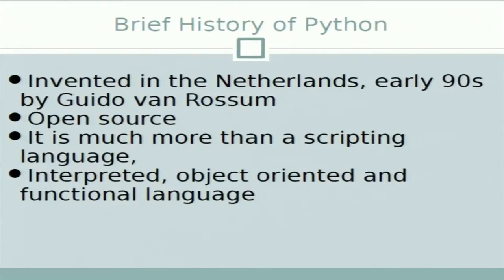The brief history of Python is that it was invented in the Netherlands in the early 90s by Guido van Rossum. It's an open source language. Earlier it was thought of as just a scripting language but it's much more than a scripting language. We can use it as a system language too. It is an interpreted, object oriented and functional language.